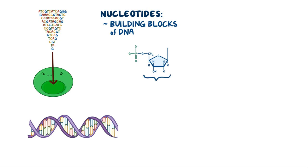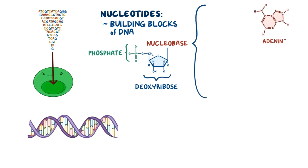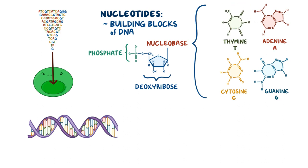Nucleotides of DNA are made up of a sugar, deoxyribose, a phosphate, and one of the four nucleobases: adenine, cytosine, guanine, and thymine, or ACGT for short.